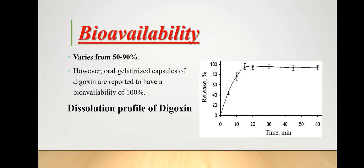The bioavailability of digoxin varies widely: oral bioavailability ranges from 50 to 90 percent for non-IV routes. However, oral gelatinized capsules of digoxin are reported to have bioavailability of 100 percent. The dissolution profile graph shows the release of digoxin over time in the bloodstream.